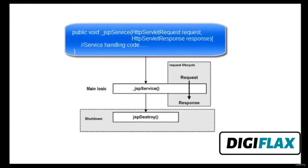The second step is JSP initialization. In this step, the container calls the JSP init() method. In this method, we generally initialize database connections, open files, and create lookup tables. The third step is JSP execution. Whenever a browser requests a JSP and the page has been loaded and initialized, the JSP engine invokes the _jspService() method. This method takes an HttpServletRequest and HttpServletResponse as its parameters and is responsible for generating the response, including handling all HTTP methods like GET, POST, etc.